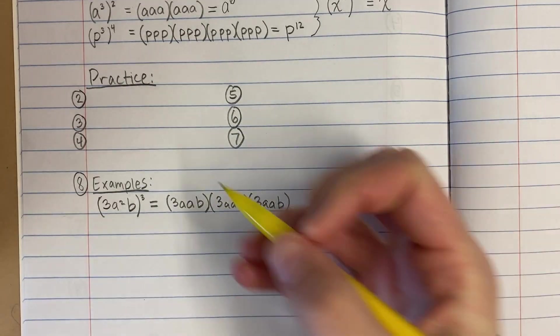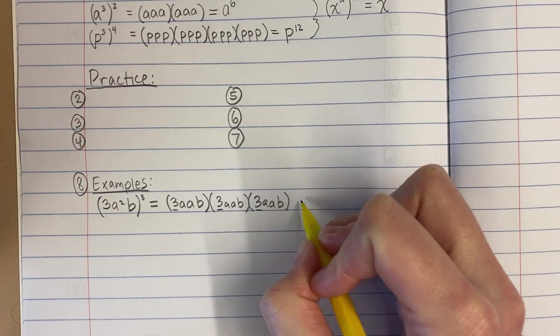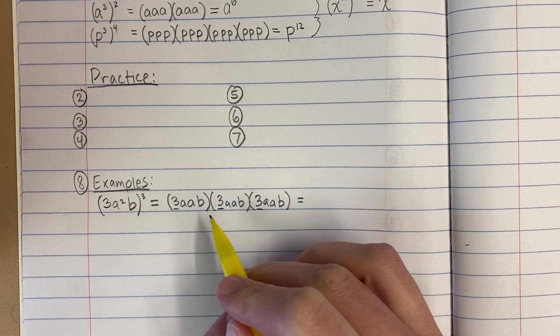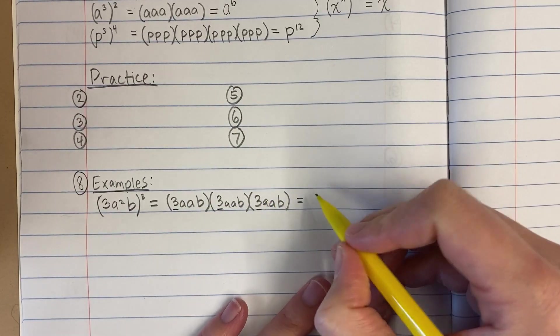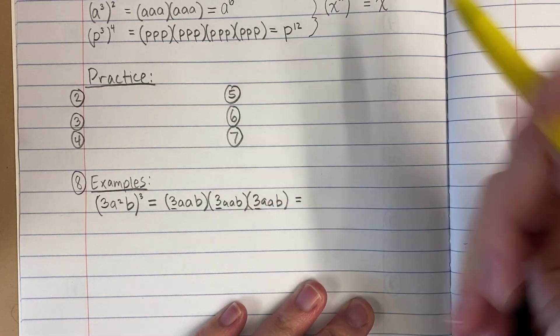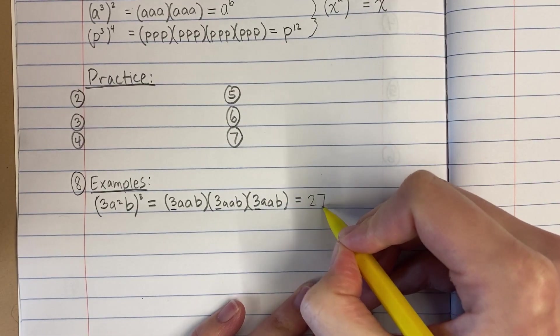So what does this equal? Well, I start with 3 times 3 times 3. Okay, 3 times 3 is 9, times 3 is 27. I get 27.